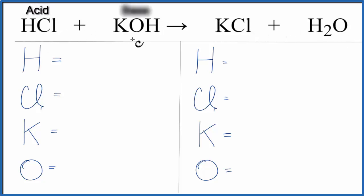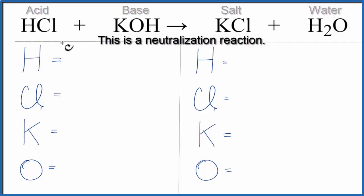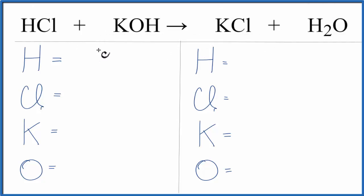So we have an acid and a base, we get a salt and water, that's neutralization. So we'll count the atoms up on each side to help us balance the equation.